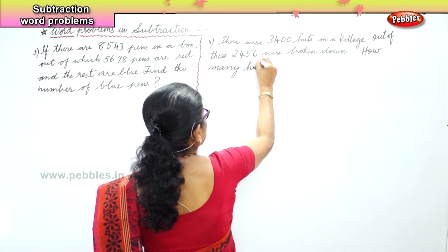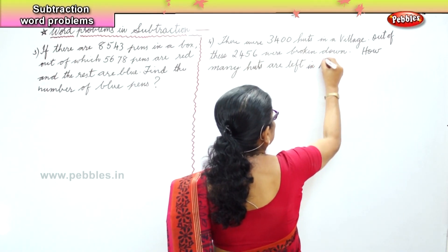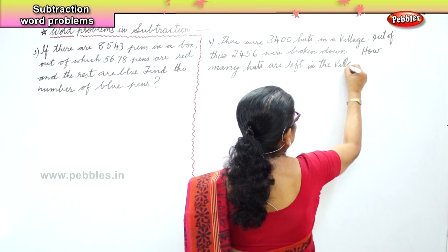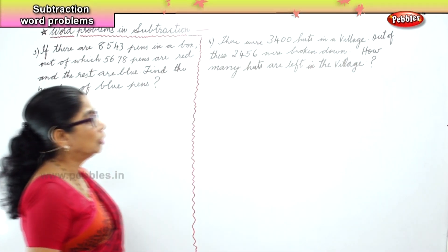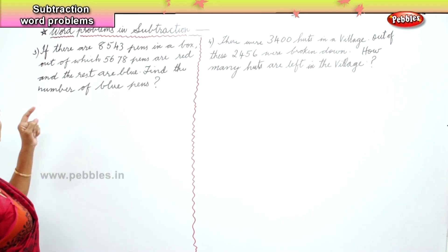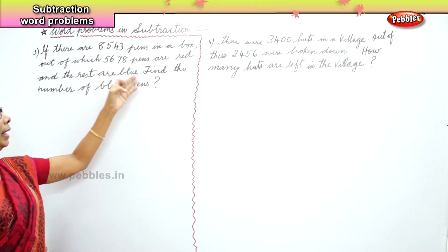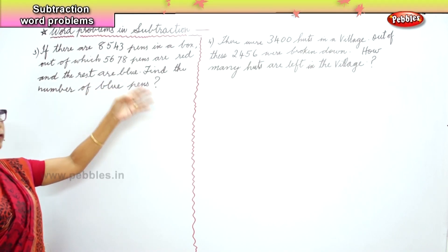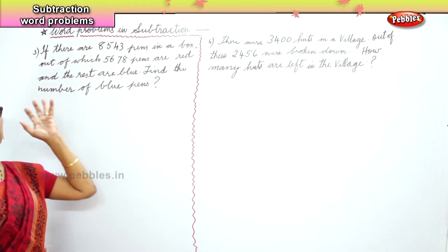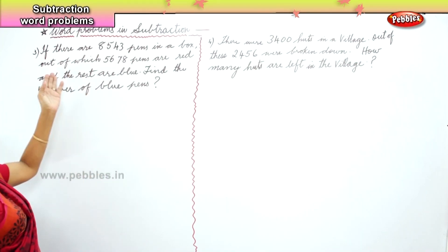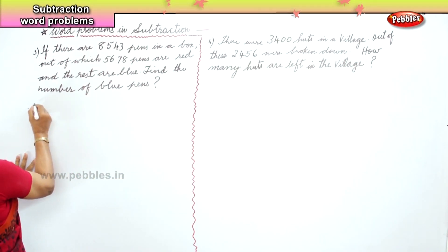Now we work on the statements. The first sum says: there were eight thousand five hundred and forty-three pens in a box, out of which five thousand six hundred and seventy-eight pens are red and the rest are blue — find the number of blue pens. The first statement is: total number of pens in the box. Second: number of red pens. Therefore: the number of blue pens.